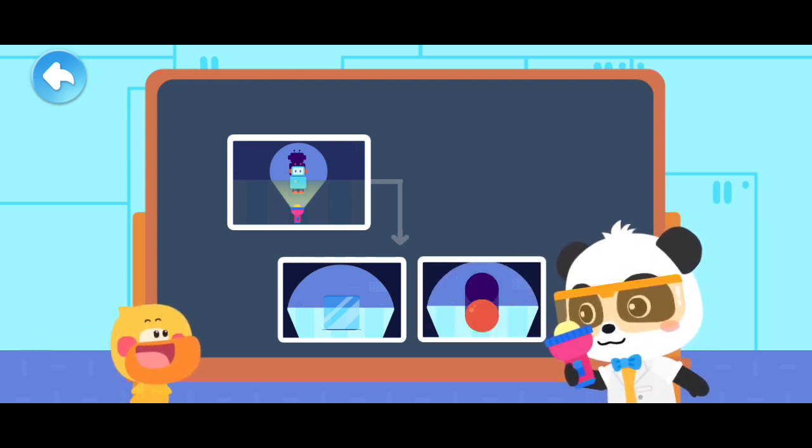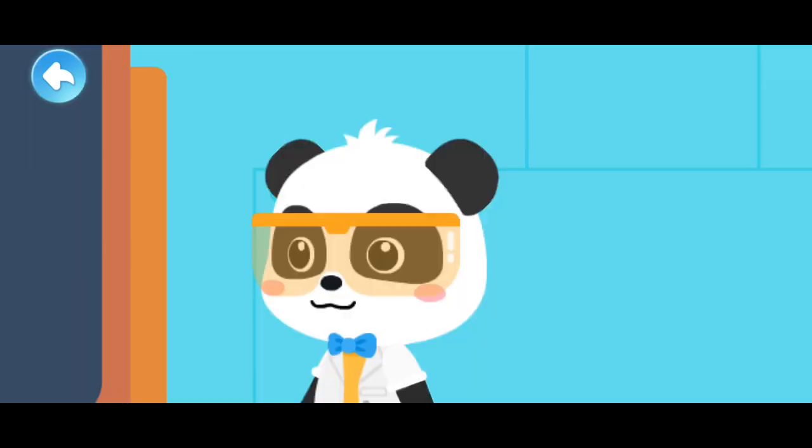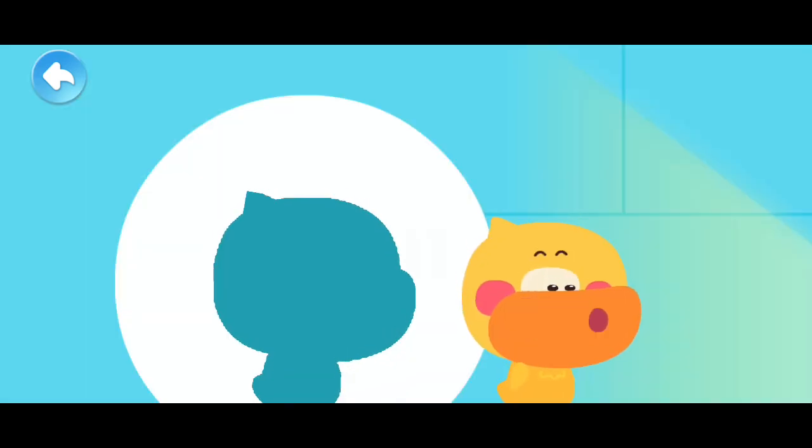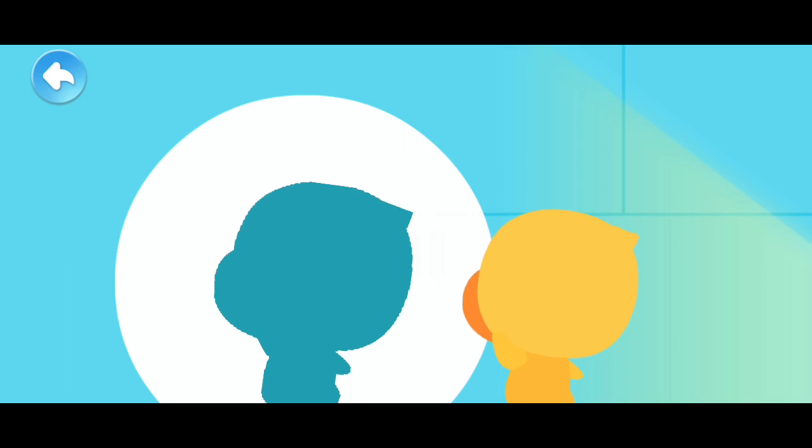Shadows appear only when light shines on opaque objects. Hey! Hey! Quacky is not transparent, so Quacky has a shadow.